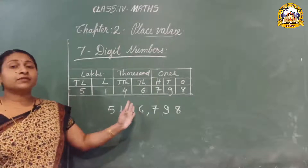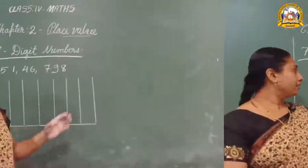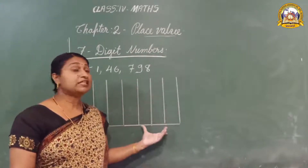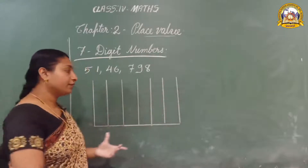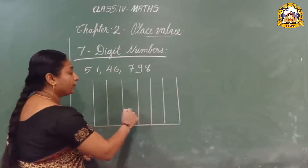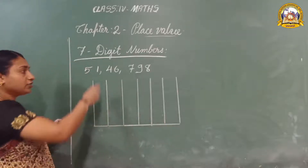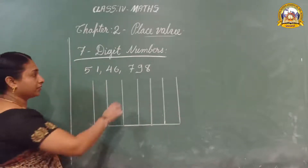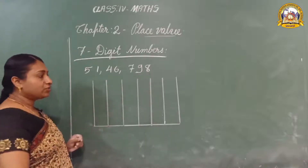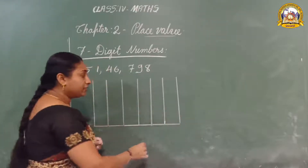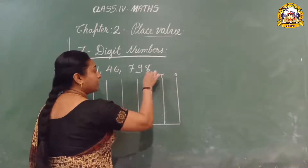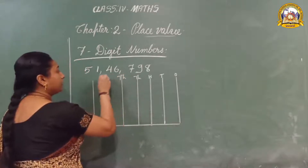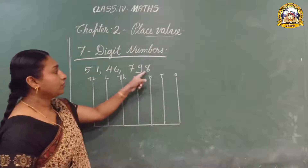Next, let us arrange this number on an abacus. There are seven digits, so we need seven spikes. How many spikes are there? One, two, three, four, five, six, seven. Let us arrange the beads on the abacus: ones, tens, hundreds, thousands, ten-thousands, lakhs, ten-lakhs. So, eight ones — eight beads are needed.